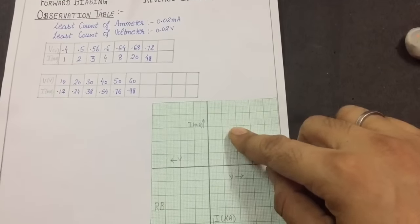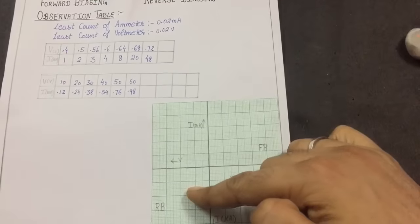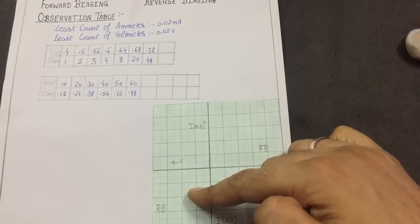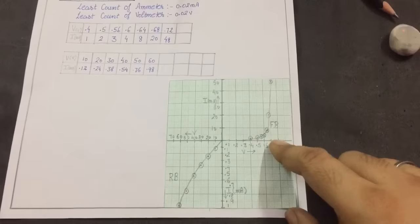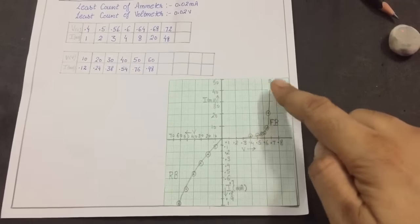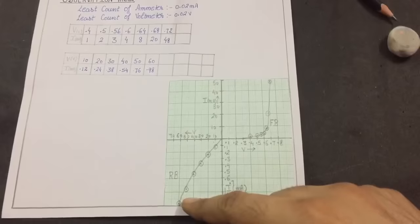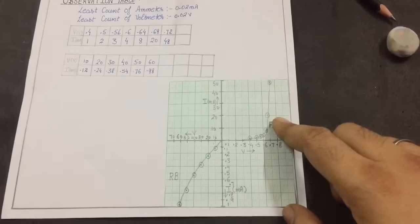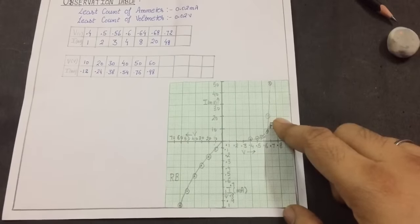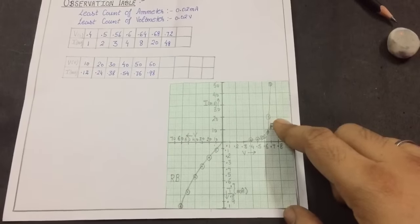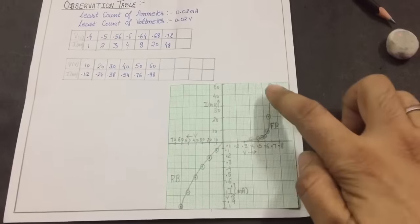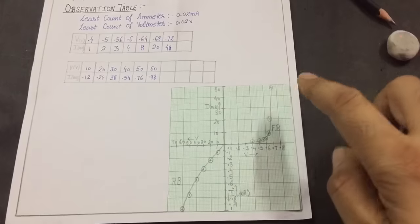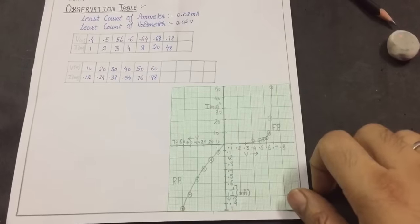Our graph is now ready, showing both forward bias and reverse bias. Now we can see the main difference between this p-n junction diode IV graph and the graph you get in Ohm's law — in Ohm's law you get a straight line, but here we get this kind of curve, which tells us that a p-n junction diode is a non-ohmic conductor.